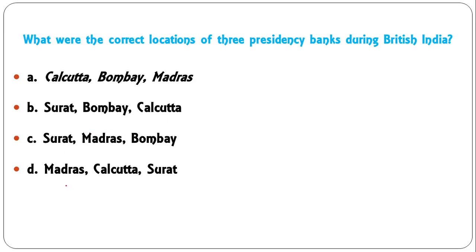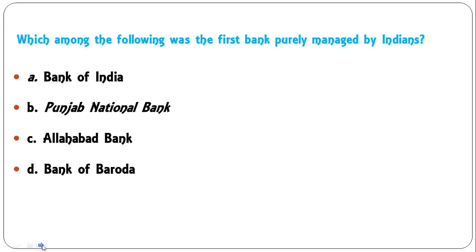What were the correct locations of the three presidency banks during British India? The three presidency banks were Bank of Bengal, Bank of Bombay, and Bank of Madras, located in Calcutta, Bombay, and Madras respectively.